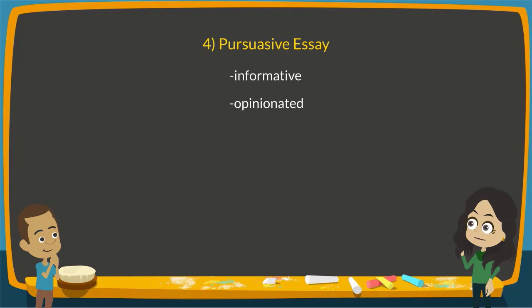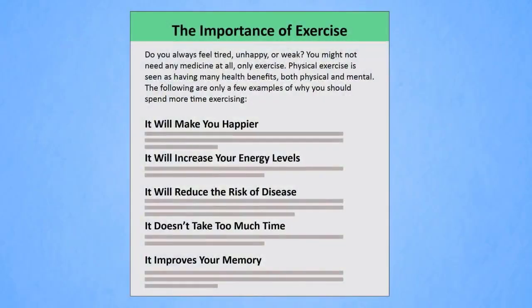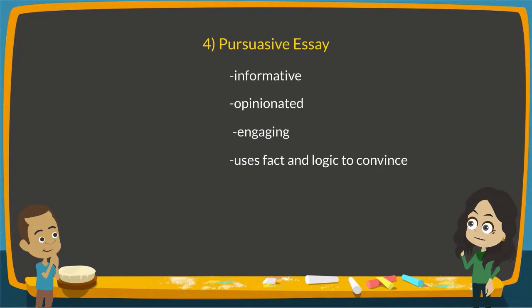The purpose of this type of essay is to convince the reader to accept the writer's point of view. For example, look at this essay on why you should spend more time exercising. Notice each paragraph gives you a reason for how exercise will improve your life — they are backed up with facts and examples. Also notice that it doesn't mention the possible negative sides of exercising, so it doesn't provide a balanced argument. It only presents one opinion.